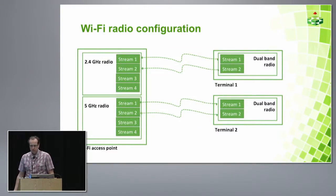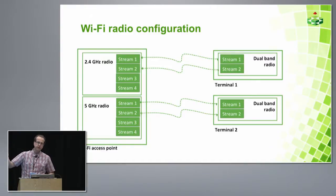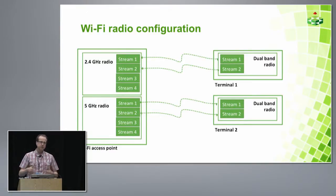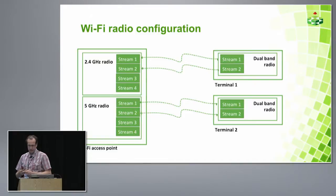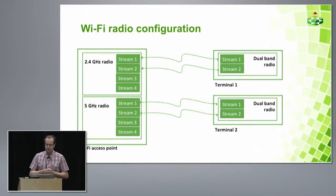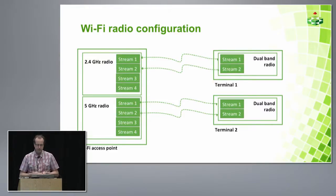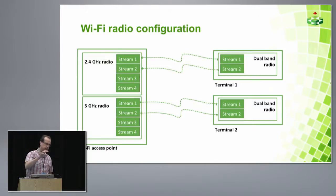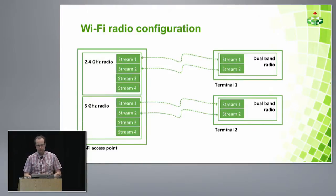Here is the basic configuration. APs have two radios; clients have one radio, so a client can talk only to either 2.4 or 5 GHz at once. We haven't yet seen clients that can simultaneously use both bands. Each radio — for example, a dual-band radio — has one or more streams, and these streams include transmitters and receivers. We're going to drill into those different blocks.